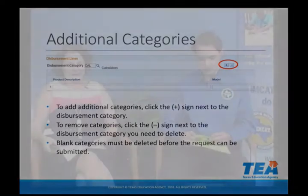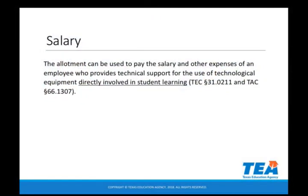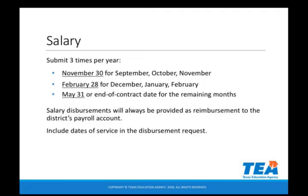What are the guidelines for using allotment funds to pay for technology-related salaries? The allotment can be used to pay the salary and other expenses of an employee who provides technical support for the use of technological equipment directly involved in student learning — that's the key. You'll submit this three different times per year: at the end of November for September, October, and November; at the end of February for December, January, and February; and at the end of May or end of contract for the remaining months. It's always a reimbursement to the district's payroll, so future dates should never be included, and you need to include the dates of service in your request.